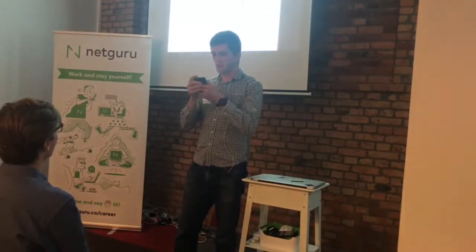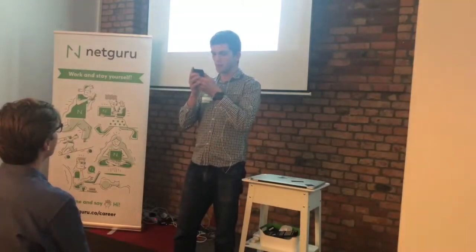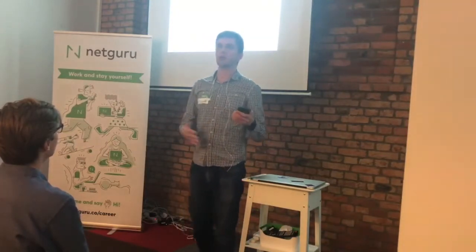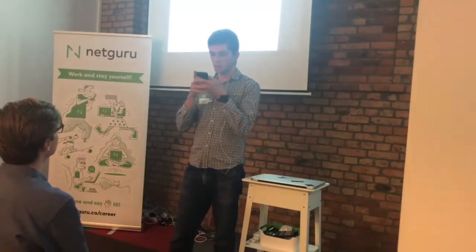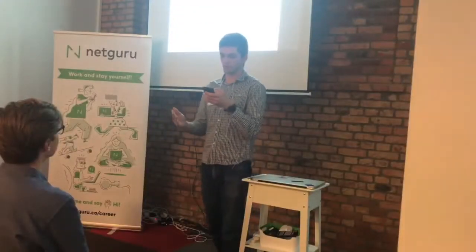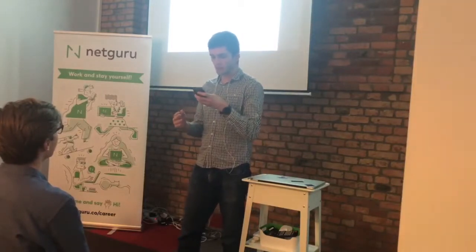Here's an example. To start a certain flow, you remember to put it on the background queue — otherwise it's going to block. We create an actual flow operation, tell it to begin so it starts, then tell it to wait until finished so the next flows don't jump in front of it.